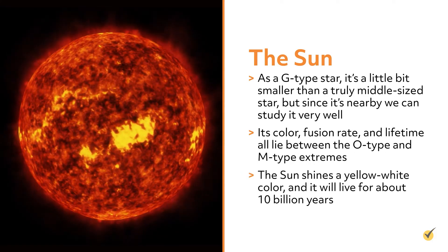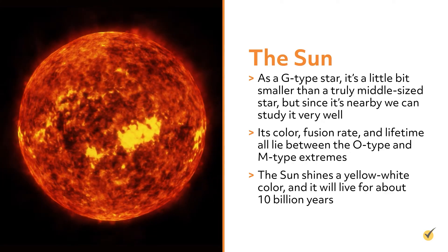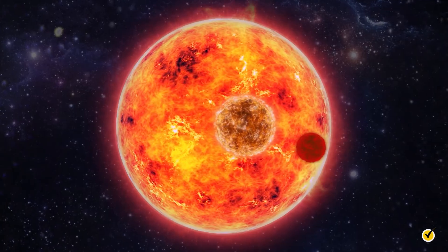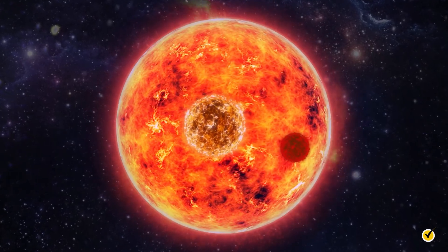The Sun shines a yellow-white color, and it will live for about ten billion years. This image shows the size of the Sun versus a smaller K-type star and an even smaller M-type star.